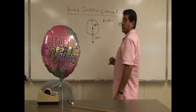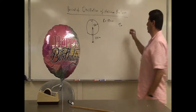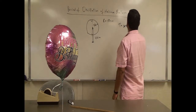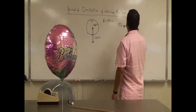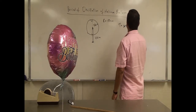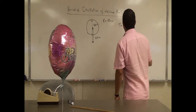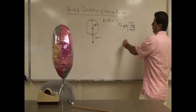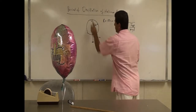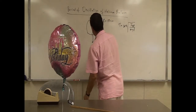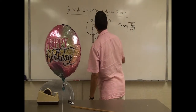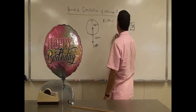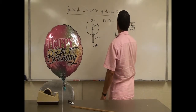Remember the equation for period of oscillation is 2π times the square root of the moment of inertia about the pivot point divided by mgd. The moment of inertia about the pivot point means the moment of inertia of this object with respect to that pivot point right here.